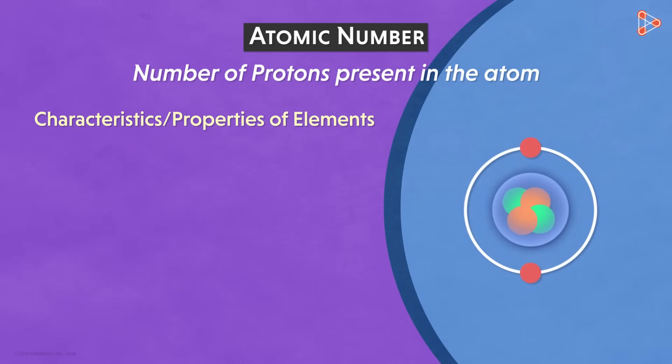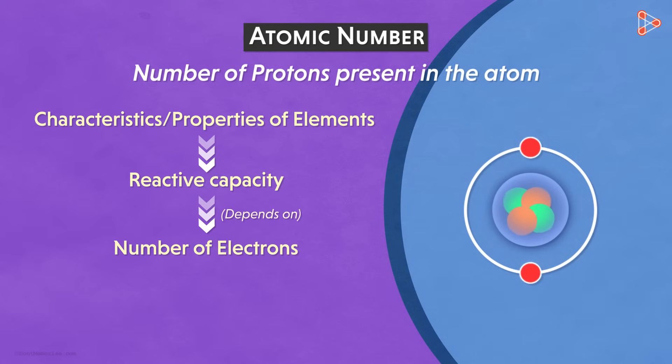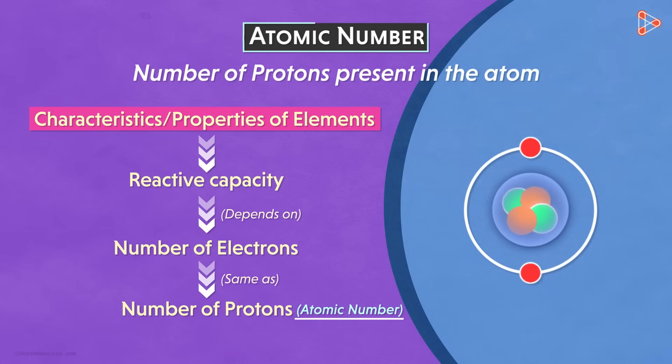The characteristics of elements will include a few properties. And these properties will be based on the reactivity of the atoms, right? We also know that the reactivity depends on the number of electrons present in the atom. And the number of electrons is the same as the number of protons. So this is why the characteristics of atoms are largely dependent on the atomic number. That is the reason the atomic number or simply the number of protons is important to us.